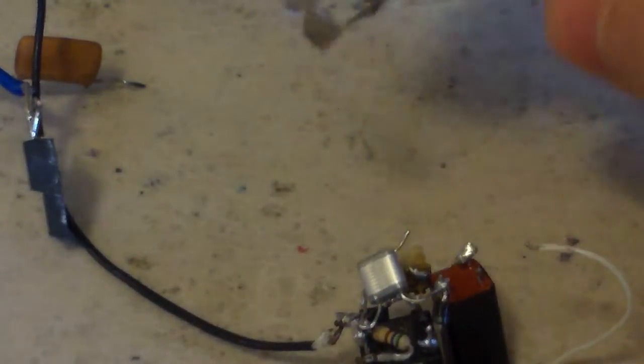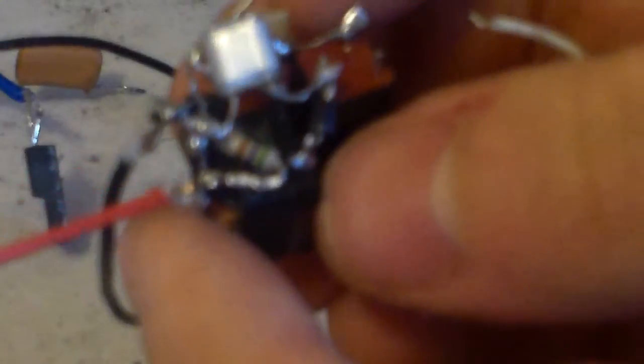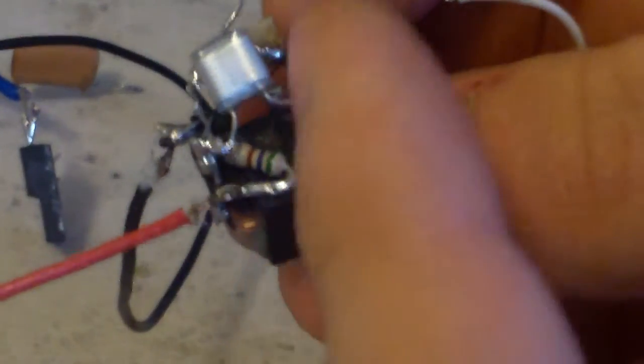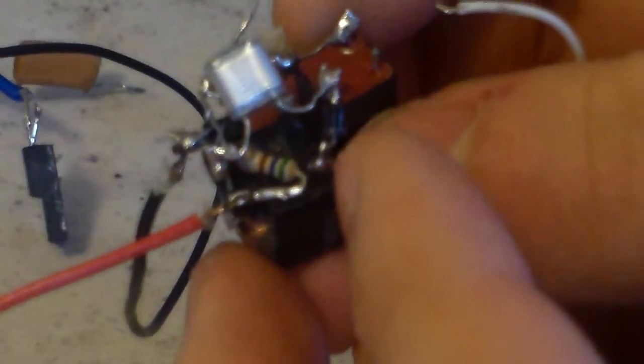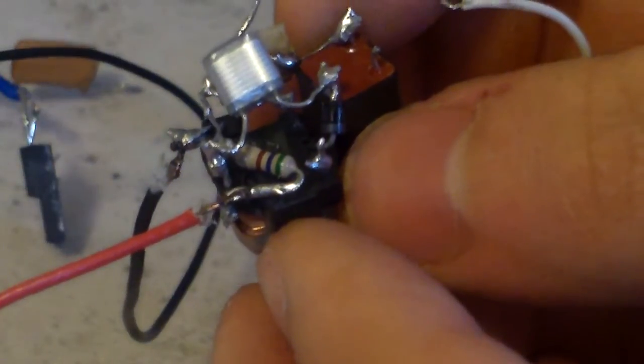I took the parts out of this and one of them was this transformer right here. And I took the transistor out and the capacitor and the diode. And I made this little inverter right here.